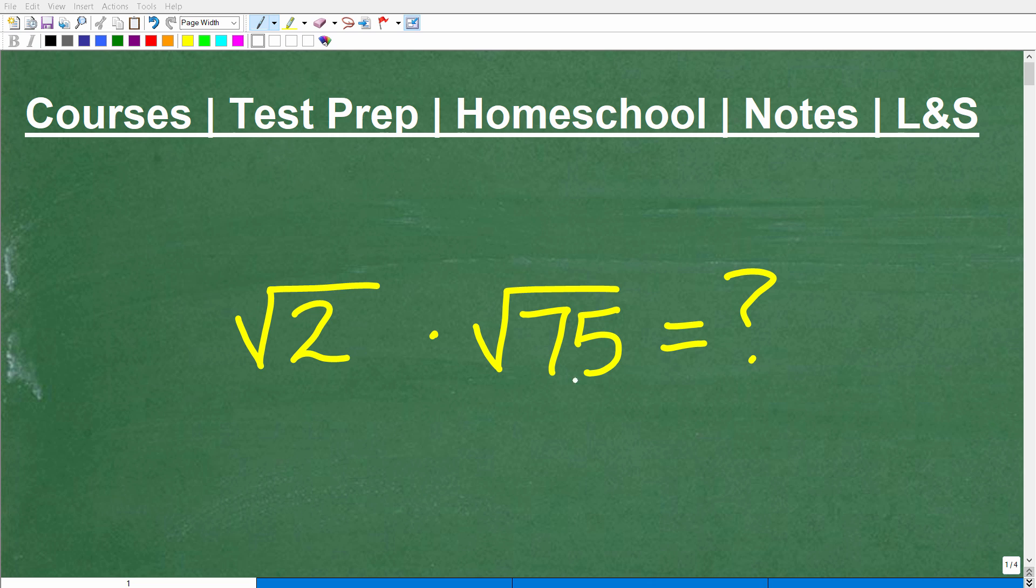Okay, so if you've taken any algebra class, you'll definitely have to handle a problem like this. We have the square root of 2 times the square root of 75. We want to do this problem without using a calculator, so put your calculators away. If you know how to do this, put your answer in the comment section. I'm going to show you the solution in just one second.